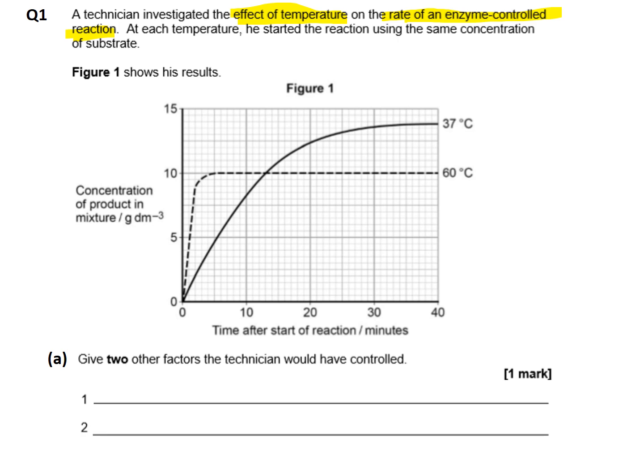It also says that at each temperature the scientist started the reaction using the same concentration of substrate. So we know that's one of the control variables — the concentration of substrate is exactly the same at 37 degrees C and at 60 degrees C.